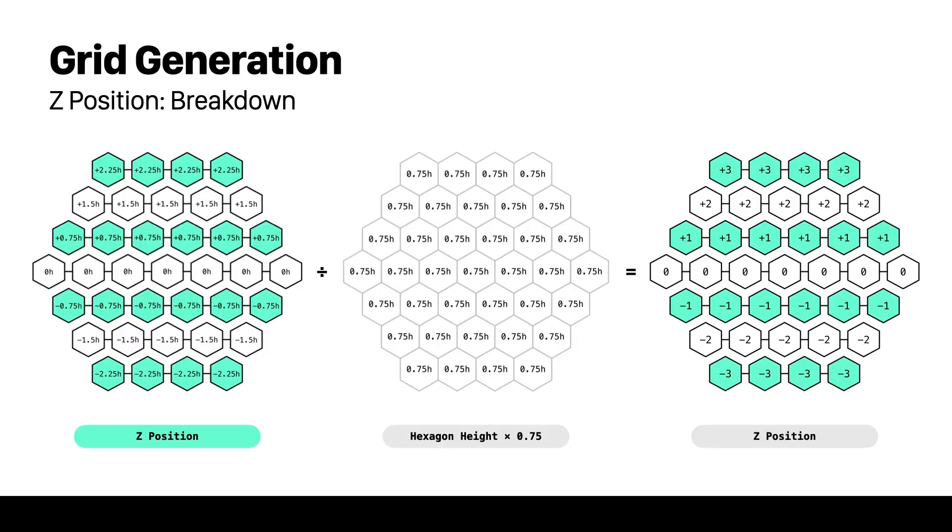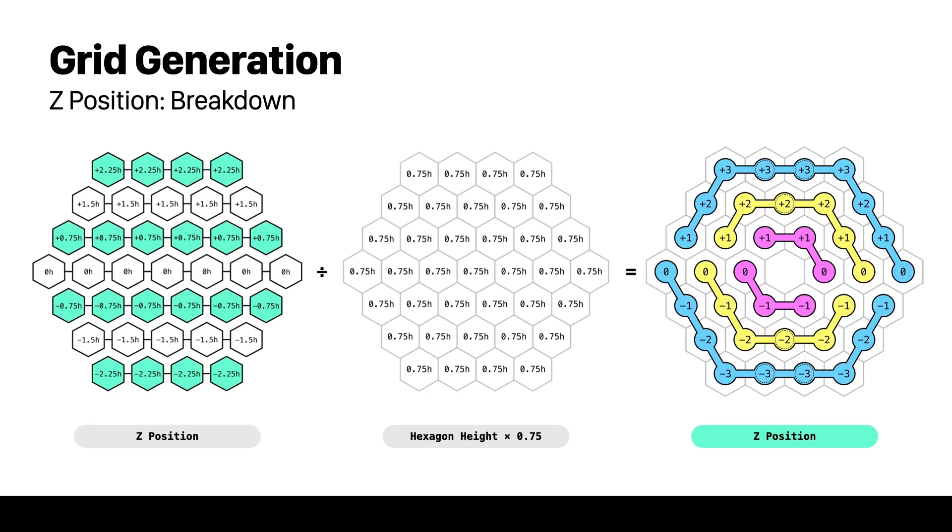When we lay out the grid these are the z position values that we get. h stands for the hexagon height as we saw earlier in the hexagon properties. To make things more clear we're going to divide with a hexagon height times 0.75. This is the result we are left with. We need to remember that the points are going to generate in a spiral so to help ourselves we will color the rings. Now it's easier for us to look for patterns.